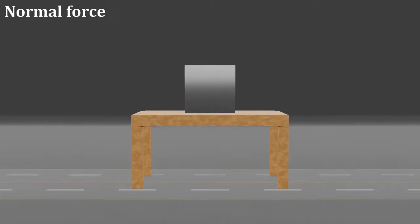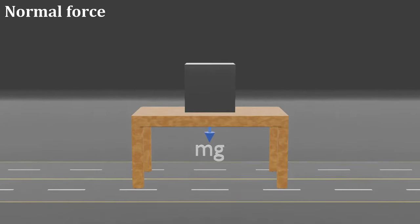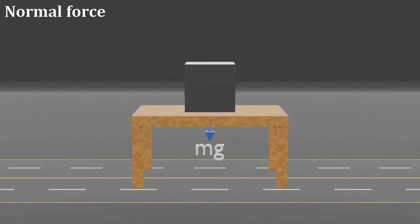Due to gravity, the weight of the metal block acts downward. As we know, weight is also a kind of force represented by mg.